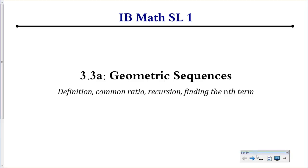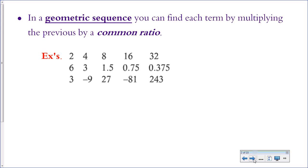This video is about geometric sequences. In a geometric sequence, you can find each term by multiplying the previous term by a common ratio. So instead of adding something each time like in an arithmetic sequence, you'll be multiplying by a constant each time.